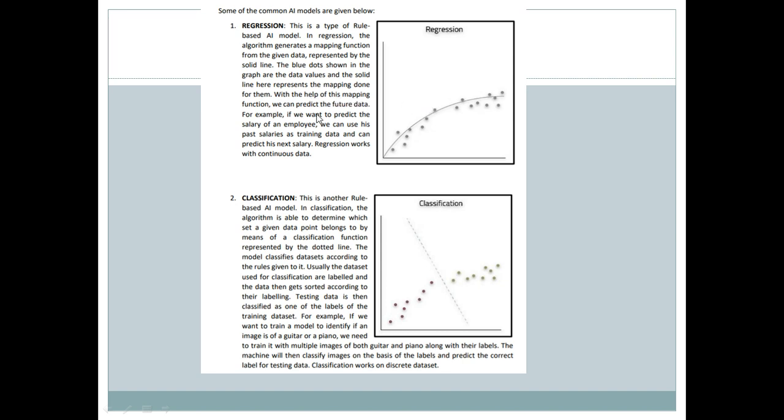With the help of the mapping function, we can predict future data. For example, if we want to predict the salary of an employee, we can use his past salaries as training data and can predict his next salary. Regression works with continuous data. Continuous data is numerical data. Then there is classification.